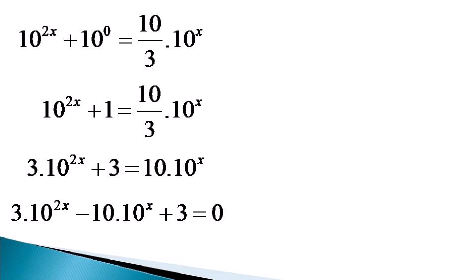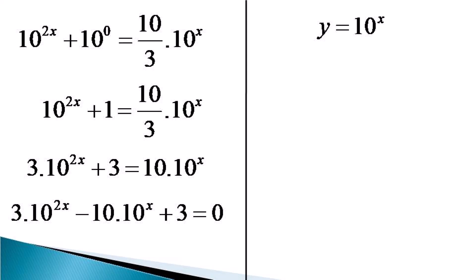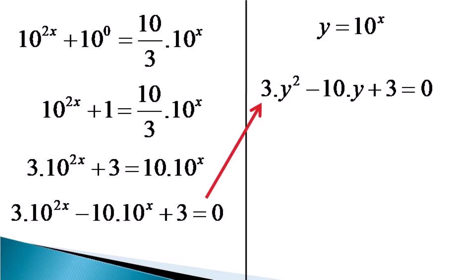When we see this equation, we find that we cannot simply take log of the equation to get rid of the indices. So in this case, we make a substitution that is y is equal to 10 raised to the power x. After making this substitution, we get the equation as 3y squared minus 10y plus 3 is equal to 0.